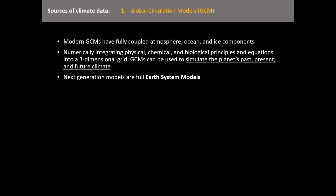Modern GCMs have a fully coupled atmosphere, ocean, and ice component, even a land component, and they're numerically integrated physical, chemical, and biological principles. The nice thing about GCMs is that you can apply them through time — into the past, the present, or simulate future climate. This is what is done in CMIP-5 and CMIP-6 to estimate the future state of the Earth's climate. The next generation, Earth system models, also couple atmospheric and ocean simulations to dynamic vegetation models and carbon models — they're a little bit more complex but that's where we're moving nowadays.